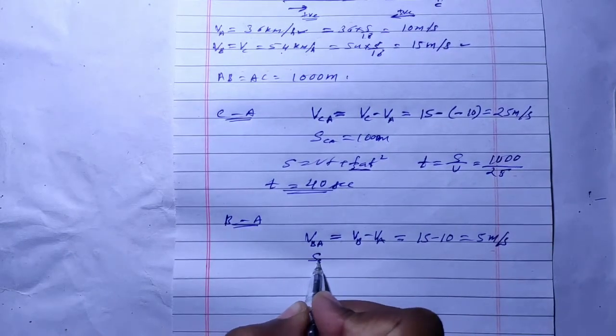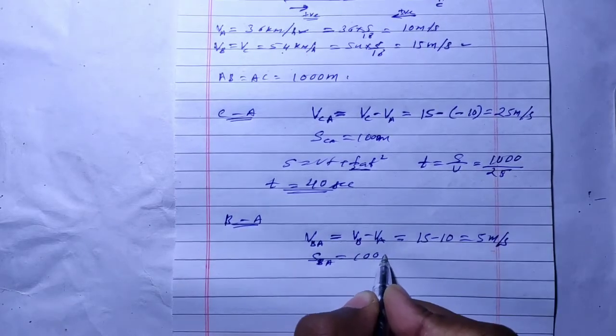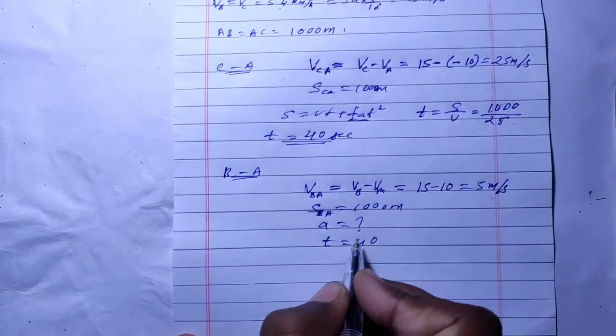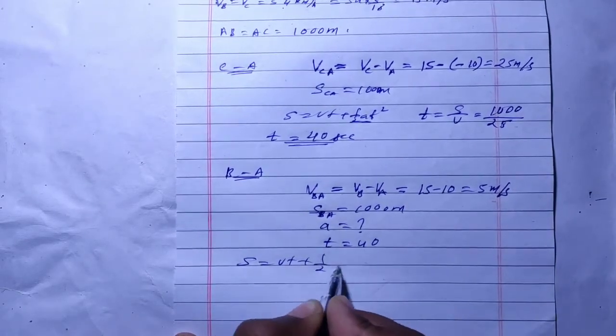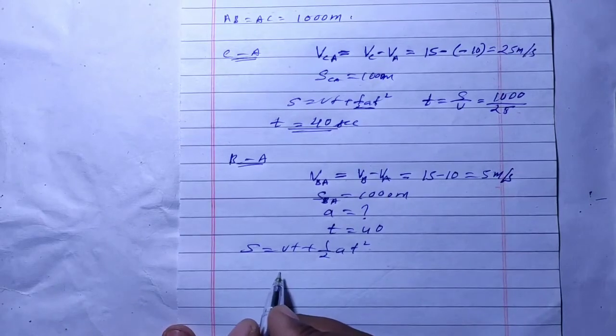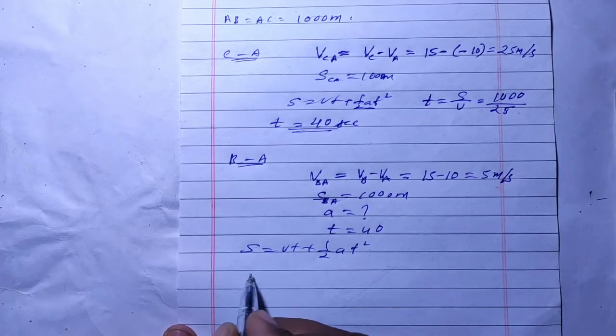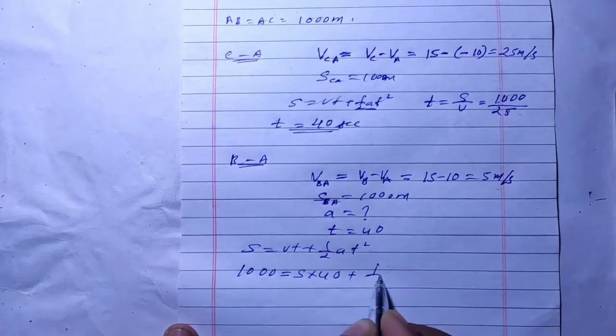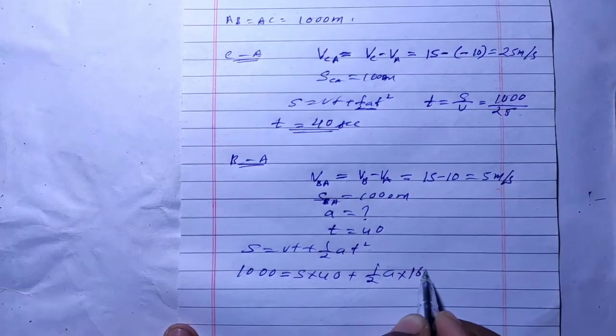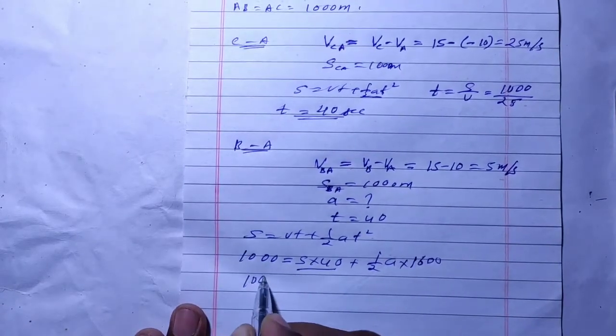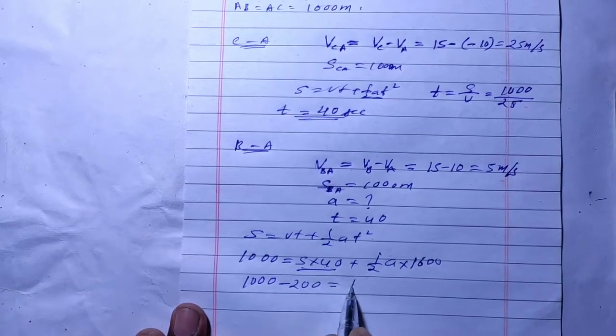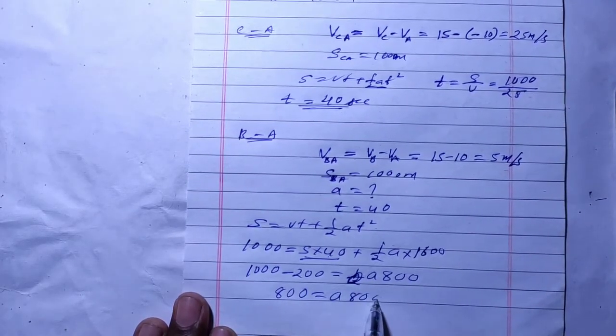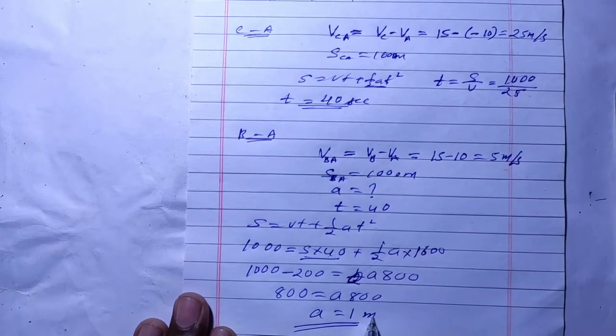The distance is 1000 meters. We need to find the acceleration, and the time we have is 40 seconds. Applying Newton's second equation, s equals ut plus half at squared. Here s is 1000, u is 5, so we have 1000 equals 5 times 40 plus half a times 40 squared. 40 squared is 1600. Solving this: 1000 minus 200 equals 800, which equals half a times 1600. So 800 equals 800a, giving us a equals 1 meter per second squared.